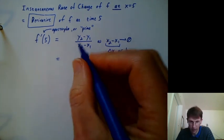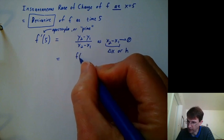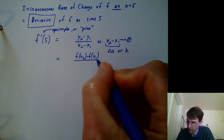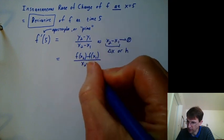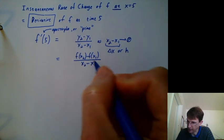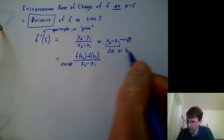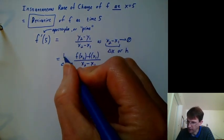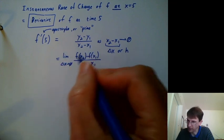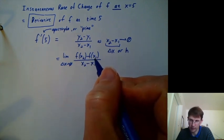So we could write this, the y2 minus y1, we could write as f of x2 minus f of x1 over x2 minus x1. And we want that as delta x or h goes to 0. And we'll use this term from chapter 1 called limit. We want the limit of this, the behavior of it as delta x is going to 0, but it doesn't exactly equal 0.